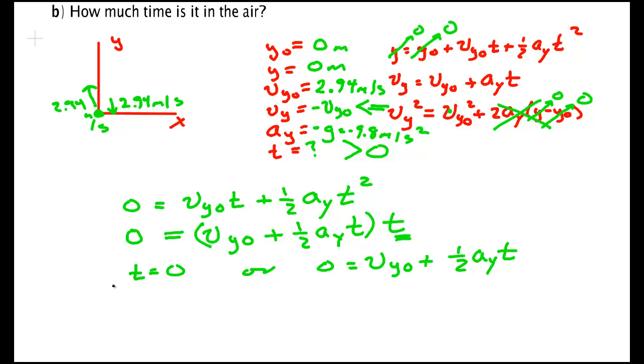So, one solution is t equals zero. That's when this term is zero. Or, another term is zero equal vy naught plus one-half ay times time. Now, it turns out this equation is not the one we want because we're asked how much time is in the air. We're not asked, does he originally start at y equals zero. So, this one, we know it has to be greater than zero. He's in the air. So, this is what's called an extraneous solution.